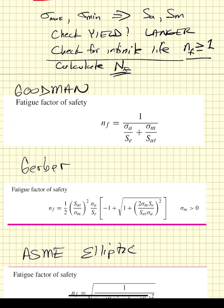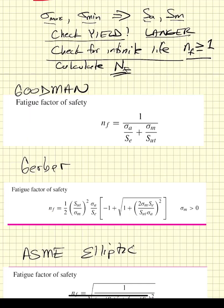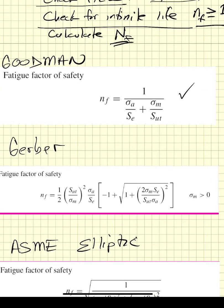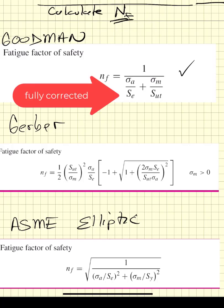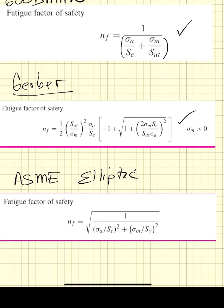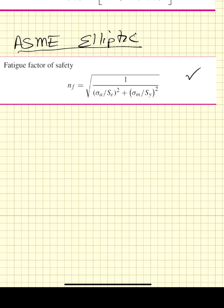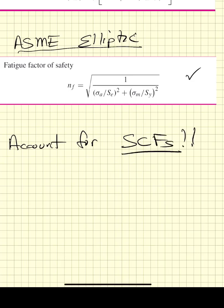In your spreadsheet, enter maximum and minimum stress to calculate stress amplitude and mean stress, check yield with the Langer criterion, then calculate factors of safety using the Goodman equation (s_a / S_e + s_m / S_ut, with one over that giving N), the Gerber criterion, and the ASME elliptic. The last thing we'll cover in the next lecture is stress concentration factors — SCFs drive local stress up and require finding sigma_a and sigma_m incorporating them.